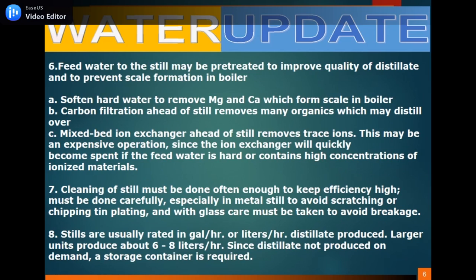Feed water to the still may be pre-treated to improve the quality of the distillate and to prevent scale formation in the boiler. Hard water should be softened to remove magnesium and calcium, which form scale in the boiler. Carbon filtration ahead of the still removes many organics which may distill over. A mixed-bed ion exchanger ahead of the still removes dissolved ions. This may be an expensive operation since the ion exchanger will quickly become spent if the feed water is hard or contains high concentrations of ionized materials.